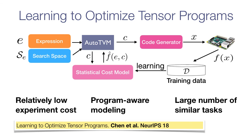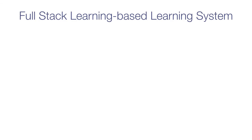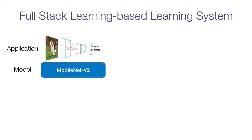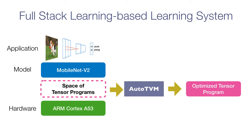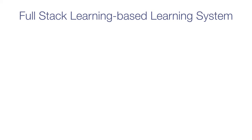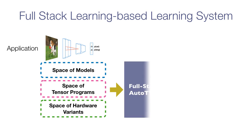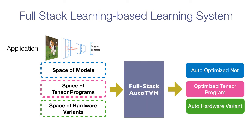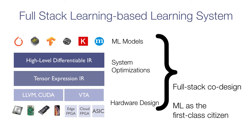Besides existing research, there are new research challenges we want to explore. Currently TVM is an automatic system that searches over a space of possible programs to output an optimized tensor program. But we can imagine a broader search space that includes not only the program itself, but also the space of models, tensor programs, and hardware variants. We want to build a full-stack system that gives you a combination of optimized model, program, and hardware variant, requiring co-design of high-level ML models, system optimization, and hardware design together — putting machine learning as a first-class citizen.